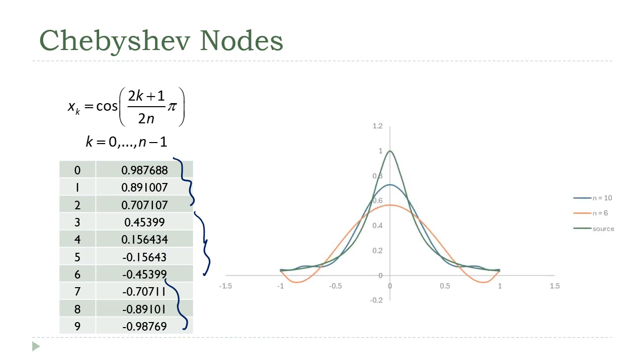If you look at the graphs, I've got the original graph and I've got the n equals six graph here again. And I've replaced the n equals 10 evenly distributed points graph with the graph that I get from using these points.